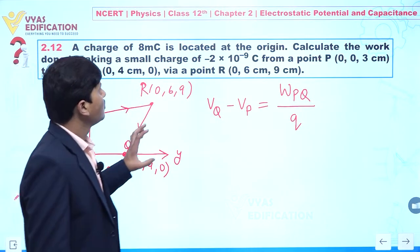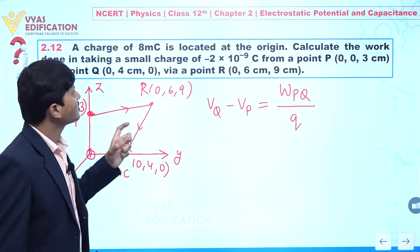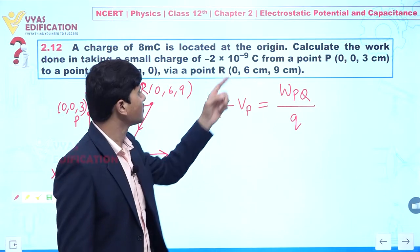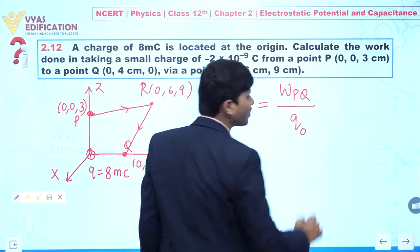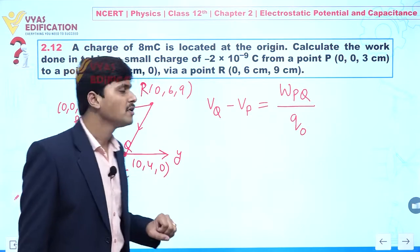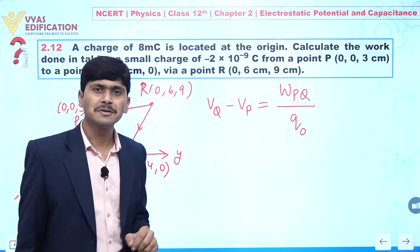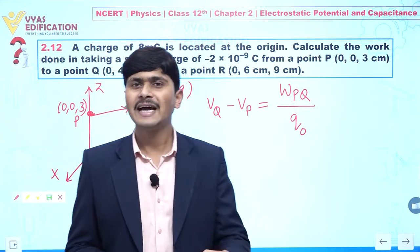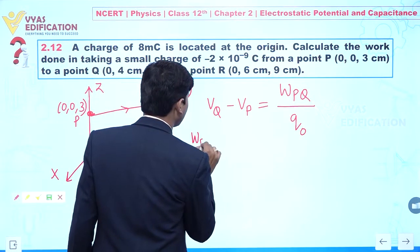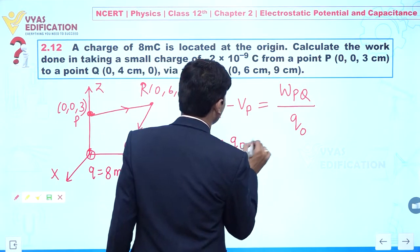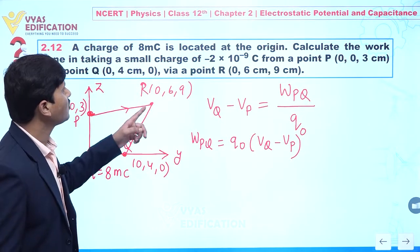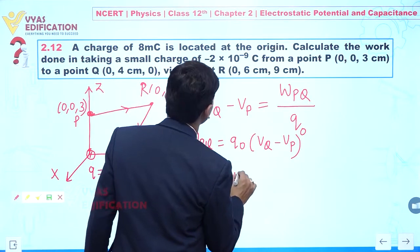The value of the test charge q naught is minus 2 into 10 to the power minus 9 coulomb. Now, the total work done does not depend on the path — it depends only on the final and initial positions. So we write: W_PQ equals q naught times (V_Q minus V_P).